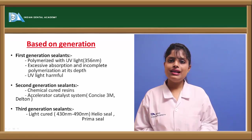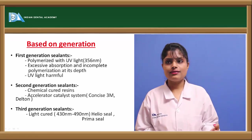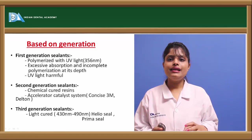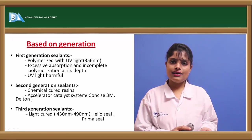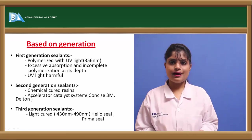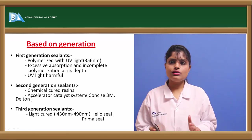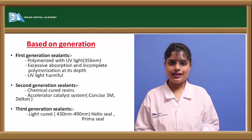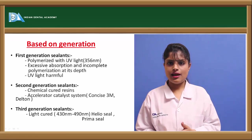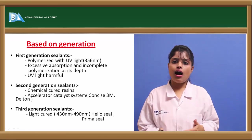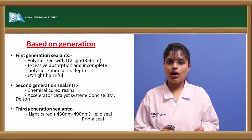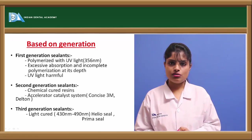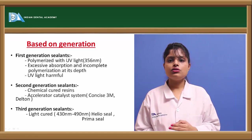Even more, UV rays are more harmful both to the operator as well as the patient. The second generation are generally self-cured or chemically cured sealants. Here an accelerator and catalyst system is used — for example, the 3M system, the Delton system, etc. are commercial names for the same. The third generation sealants are light-cured sealants. Here, Helioseal and Prima Seal are the main types. They work under light of wavelength 430 to 490 nm. Generally, argon laser is one of the most famous of all.